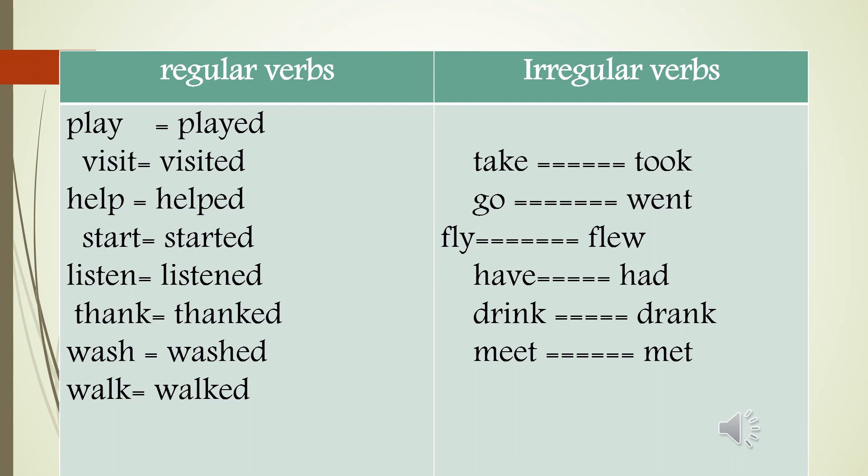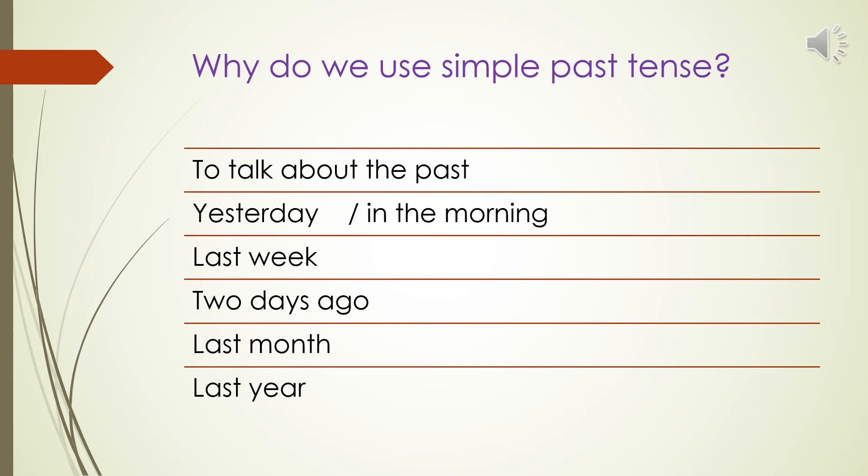Sometimes the verb doesn't change at all - for example, 'put' stays 'put' in the past, and 'cut' stays 'cut'. Going forward we will learn many more words and verbs to see whether they are irregular or regular verbs. Now, why do we use the simple past tense?